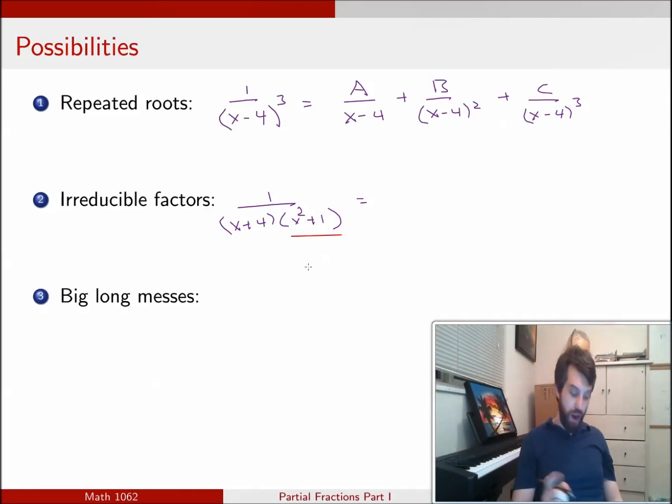So the trick here, when I try to factor this, is to do the following. For the linear term, for the x plus 4 term, I do exactly what I have always done. I pull out an A over x plus 4. But for this irreducible quadratic term, it's over the x squared plus 1, but what I put up here in the numerator is a linear, a generic undetermined linear Bx plus C.